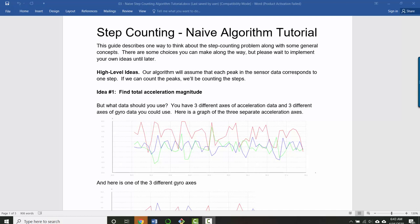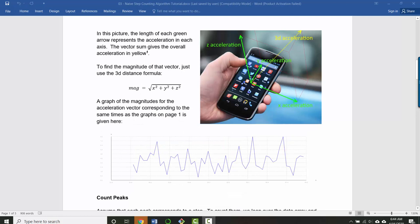So rather than using one axis, it's going to be better to use the total acceleration magnitude. You see here in some sample data I've plotted the accelerations for the three axes separately. Each of those axes represents an acceleration in a different direction. X would be laterally, Z would be into or out of the screen of your phone, and Y would be up and down.